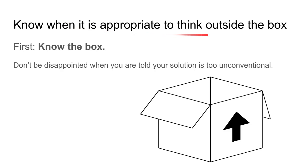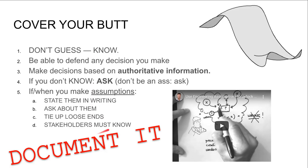Sometimes it's a good idea to think outside the box, but first you need to know the box. You need to know what the conventional ways of solving the problem are before you come up with an unconventional idea. If you don't understand why things are done the way they are, your thinking outside the box is much more likely to fail. Know the box before you think outside it. This should probably be rule number one of product design.